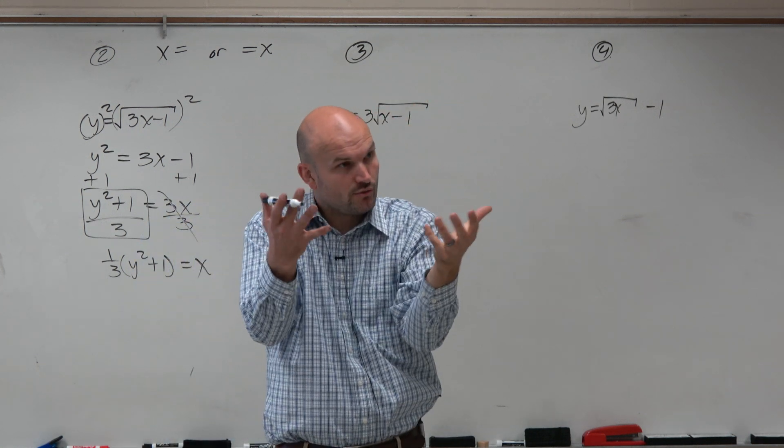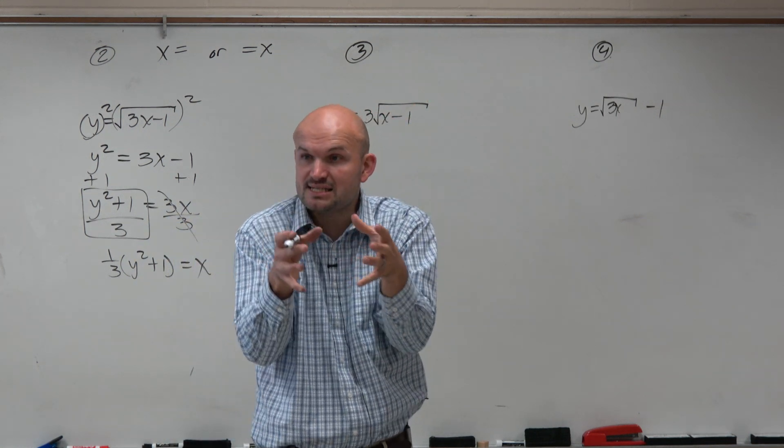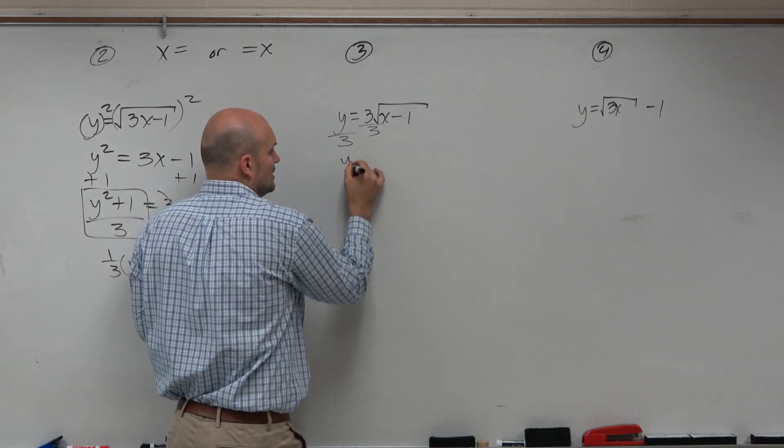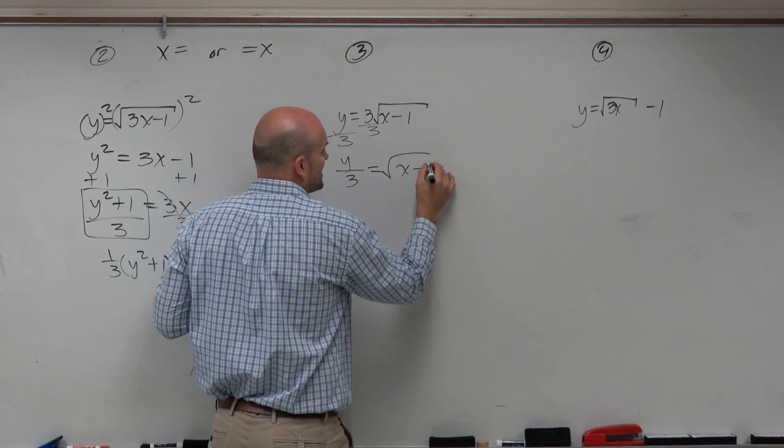We can't undo the squaring until we get rid of the 3. Right? So if you need to undo the square root or any root, you want to isolate it. So we're going to divide by 3.